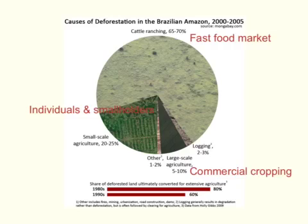Next we need to understand why this is happening. The reasons for deforestation are different in different parts of the world. These statistics show the causes of deforestation in the Brazilian Amazon — if we looked at Malaysia or the Congo in Africa, we'd get slightly different reasons. In the Brazilian Amazon, cattle ranching is the key reason for deforestation, mainly to grow cattle providing food for both the South American and North American markets — a lot going to the fast food industry. Around 65 to 70% of deforested land in the Brazilian Amazon is turned into cattle ranching land.